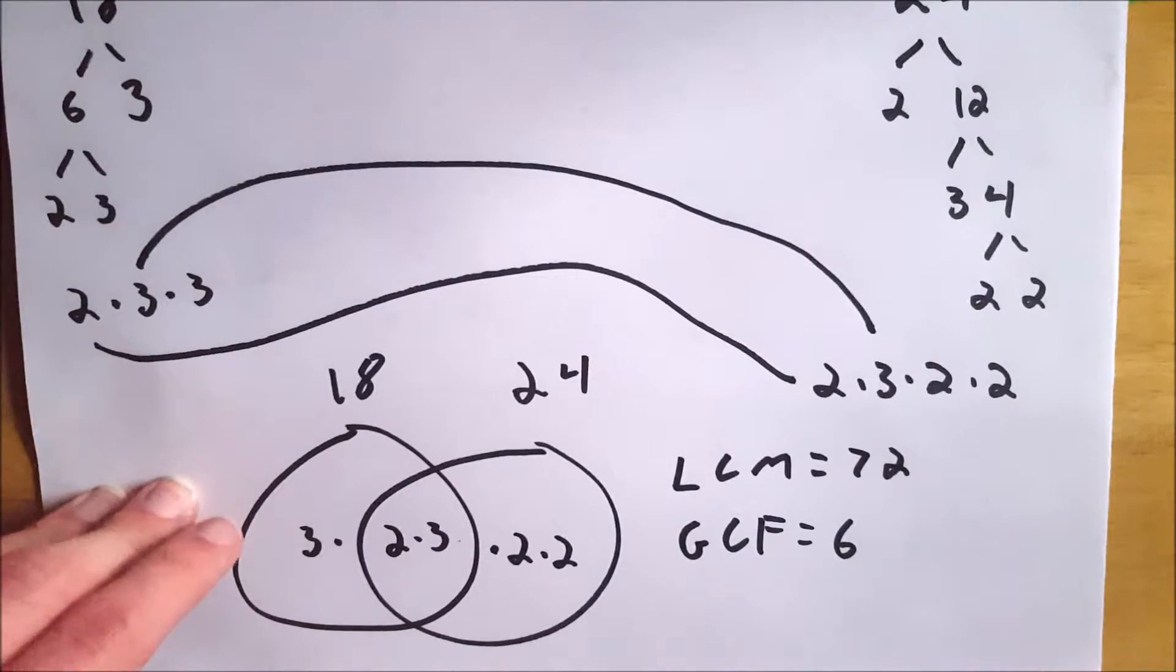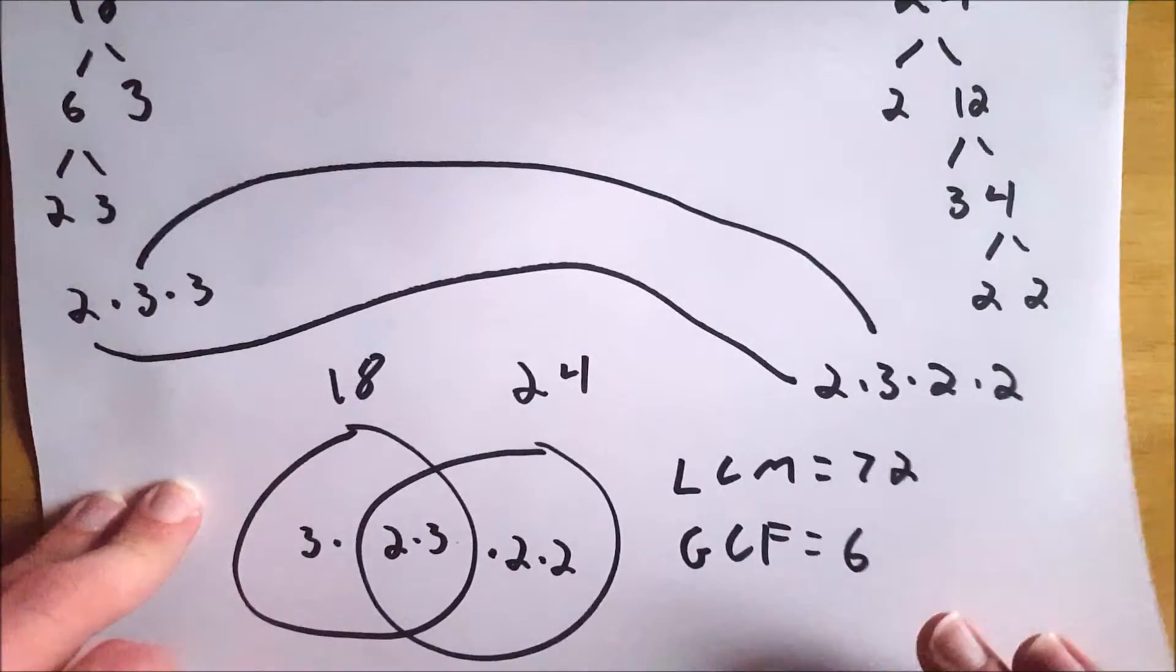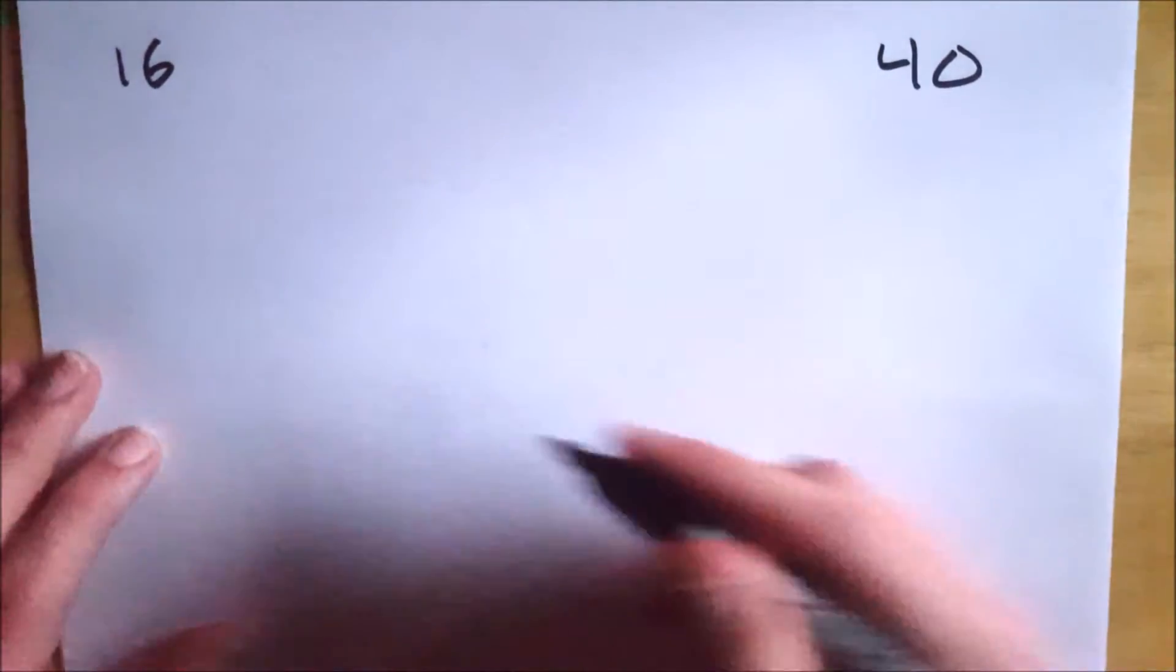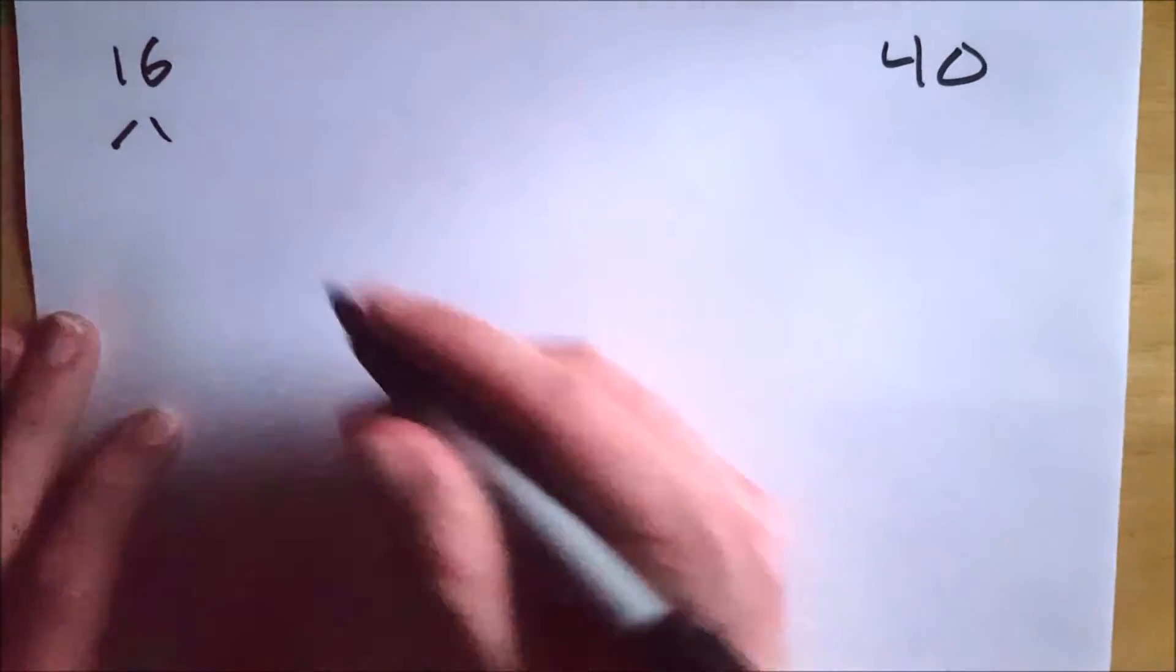So if that is enough for you, you can leave now, but for anyone who wants to see another example, I am happy to oblige. So now we're going to try to find the least common multiple and the greatest common factor of 16 and 40. So again, we want to break the numbers down into their prime factors to start.